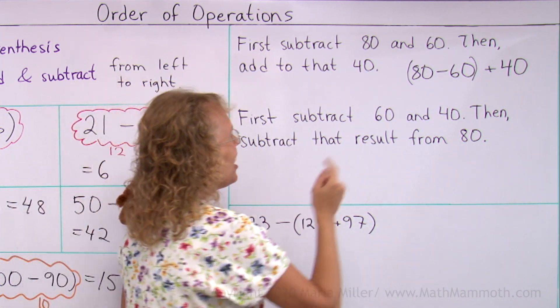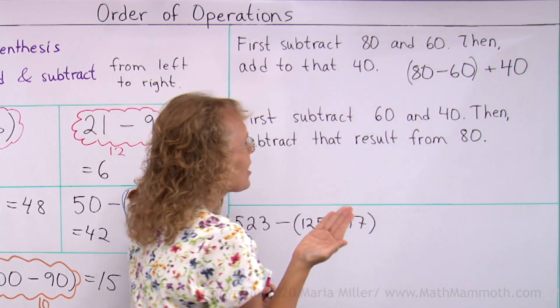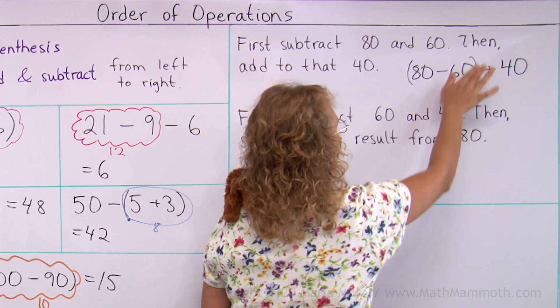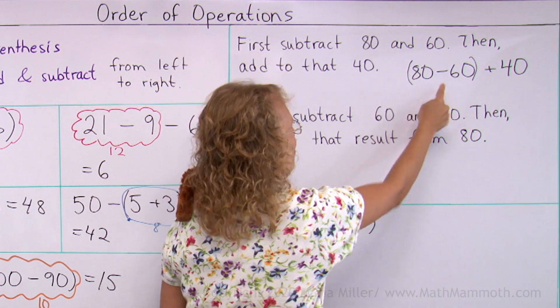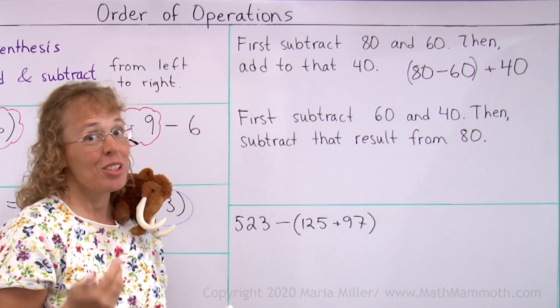However, even without parentheses, it still works the same way. Because if it did not have parentheses, I would still start with 80 minus 60. So either way, it is the same.